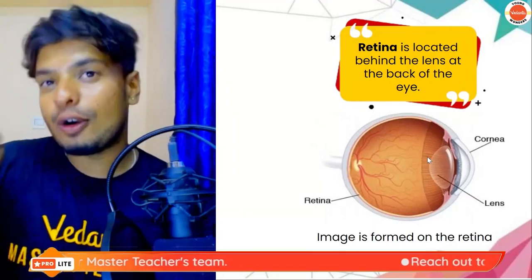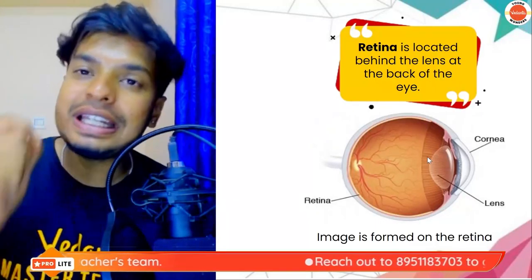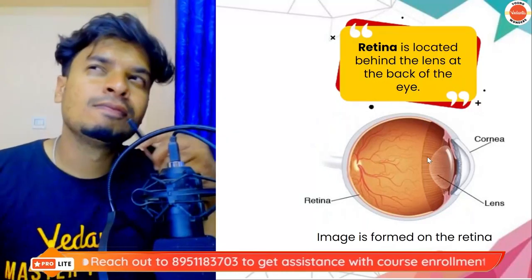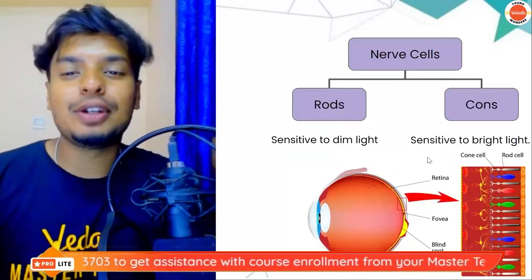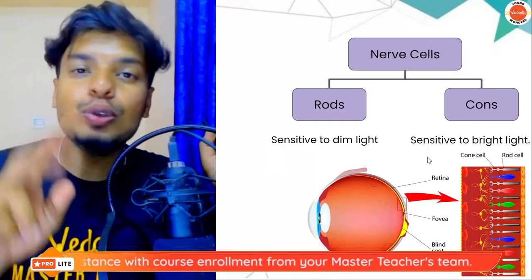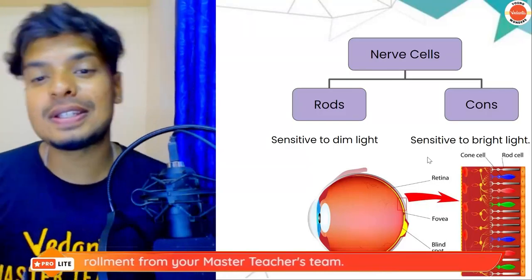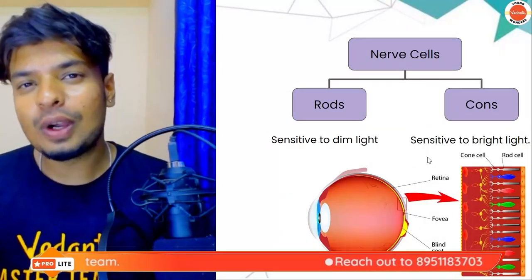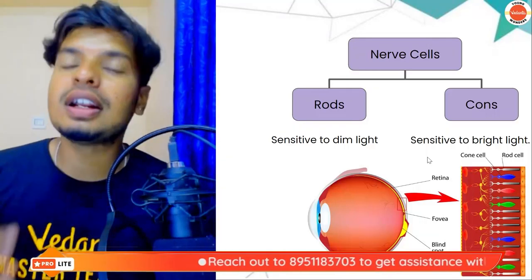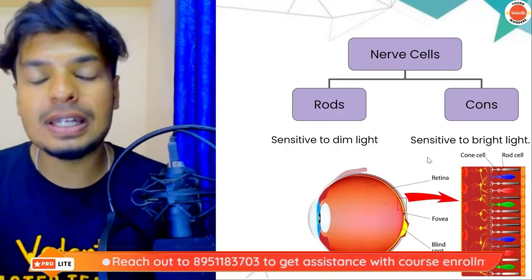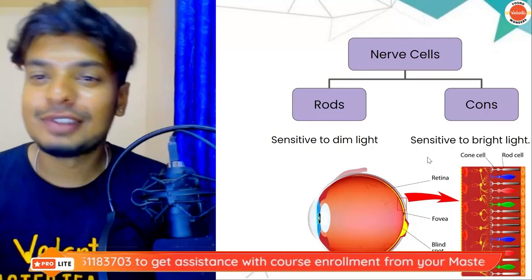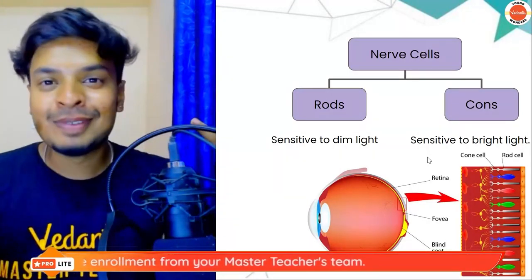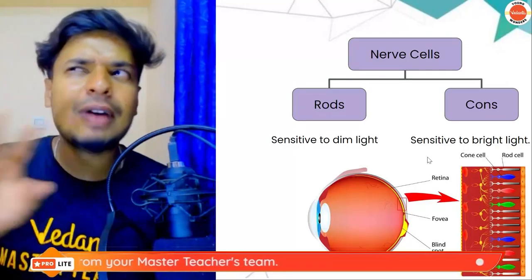The retina is located behind the lens at the back of our eyes — the image is formed on the retina. Retina has nerve cells called photoreceptors: rods and cones. Rod cells in the retina are sensitive to dim light, while cone cells are sensitive to bright light and colors. So many parts work together to give us a beautiful image.